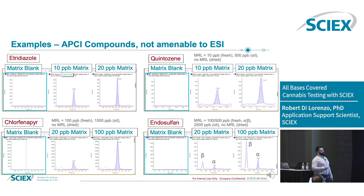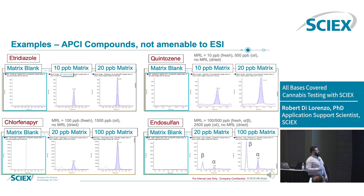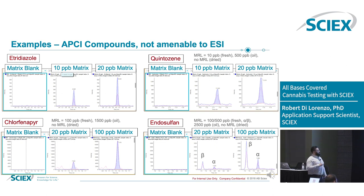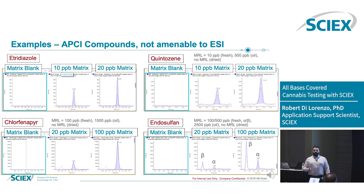What about compounds not amenable to electrospray that we have to do by APCI? These are the four major ones we have to do by APCI that simply aren't amenable to electrospray. Because a lot of these are run in APCI negative mode, not a lot of compounds will ionize in APCI negative mode — particularly hydrocarbon-based compounds simply don't.